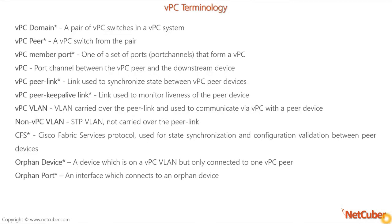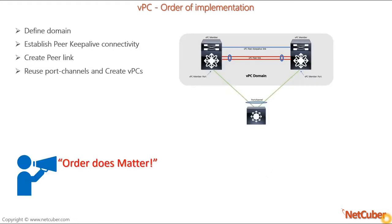A few vPC terminologies. First, vPC domain: a pair of vPC switches in a vPC system. vPC peer: a vPC switch from the pair. vPC member port: a port from a vPC group which will be configured. vPC peer link: this is a very important trunk link used to synchronize state between vPC peer devices. vPC peer keepalive link: used to monitor liveness of the peer device. CFS (Cisco Fabric Service protocol): used for state synchronization and configuration validation between peers. Orphan device: a device which is on a vPC VLAN but only connected to one peer. Orphan port: an interface connected to an orphan device.